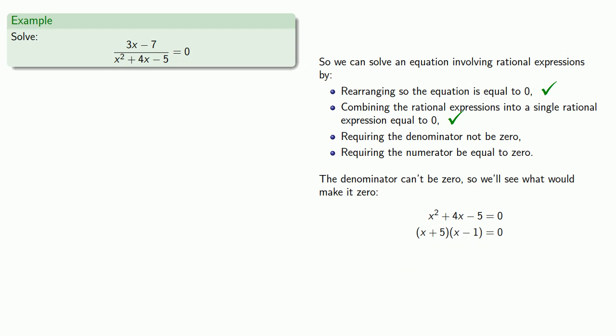Now I have product equal to zero, and so one or the other factor must be zero. So either x plus five is zero, or x minus one is zero. Solving these gives us x equals negative five and x equals one. And since these are the values that make the denominator equal to zero, we require that x can't be negative five and x can't be one.